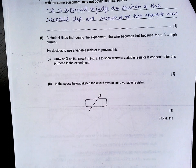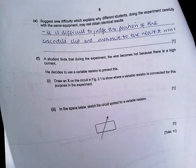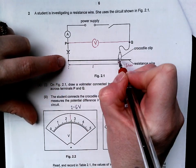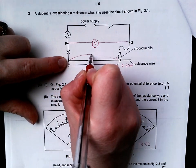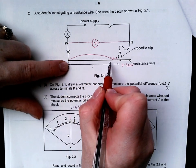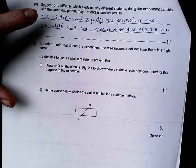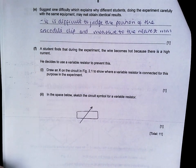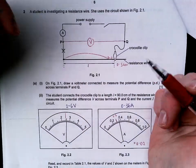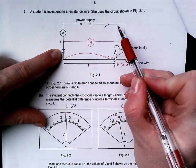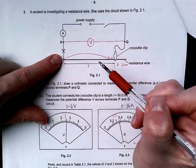F, a student finds that during the experiment, the wire becomes hot because there is a high current. He decides to use a variable resistor to prevent this. Draw an X on the circuit in figure 2.1 to show where a variable resistor is connected. If we want less voltage to be dropped across the resistance wire and we want the overall current to be reduced, we need the overall resistance to be greater. We need to add more resistance into the circuit. It needs to be connected in series.